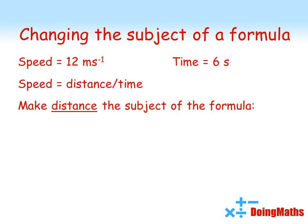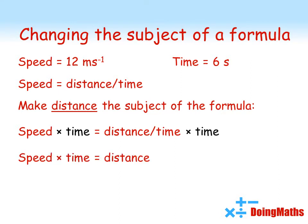To get distance by itself we need to get rid of the time that's attached to it. At the moment we're dividing by time, so to move it out the way we're going to do the opposite—we're going to multiply by time. If we do this we're left with speed times time equals distance.